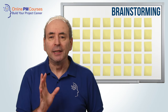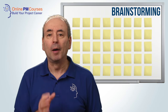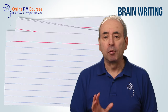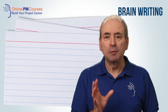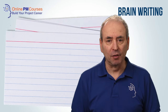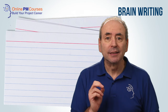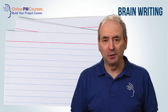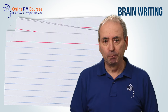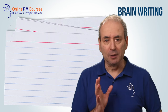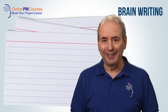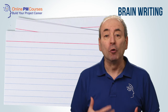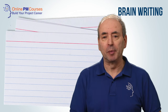Both of these problems can be overcome by my second technique: brain writing. Brain writing allows much more parallel processing of ideas. Everyone is contributing their ideas simultaneously, which makes it ideal for very large groups as well as small groups. It also overcomes bias because people are working on their ideas on their own without hearing and being influenced by others.